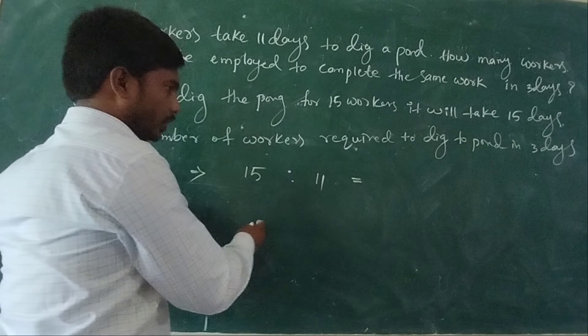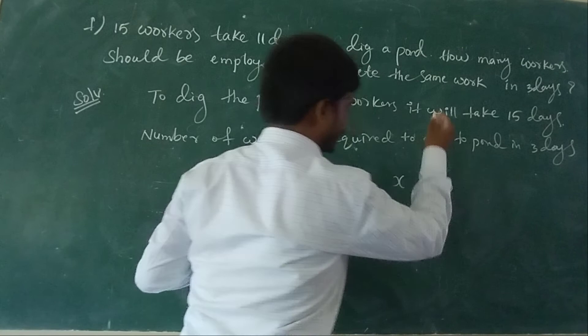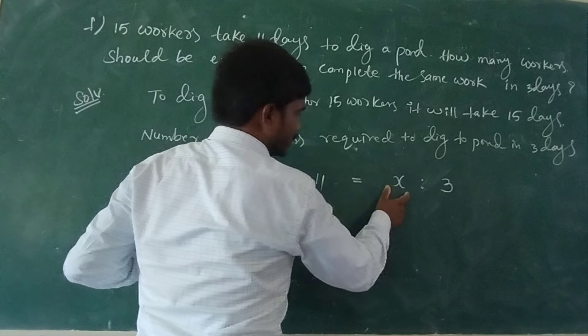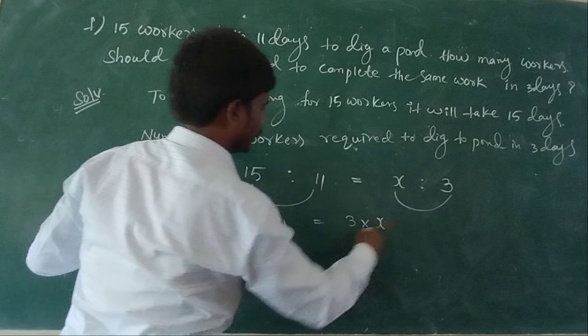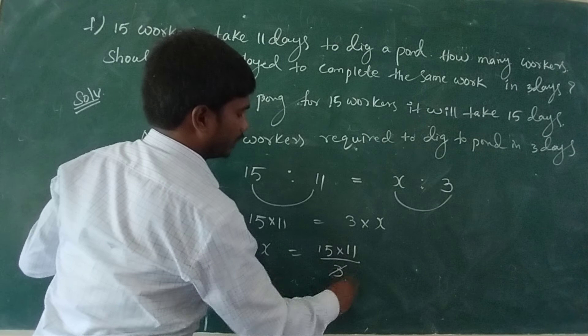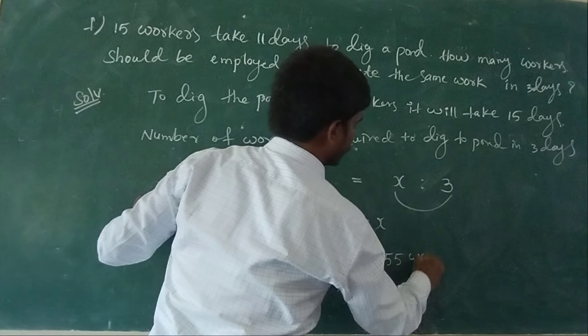How many workers are required to complete that work in 3 days? Number of workers is 15, number of days is 11; number of workers unknown, number of days is 3. Indirect variation: first two terms product equals second two terms. 3 into X equals 15 into 11. X equals 15 into 11 divided by 3, so 5 into 11 equals 55 workers.